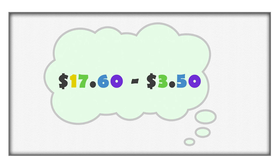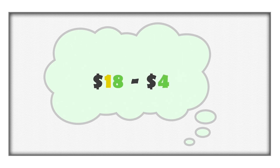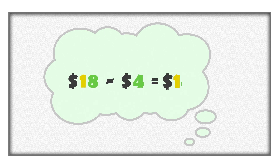We can estimate the answer. $17.60 is approximately $18, and $3.50 is approximately $4. If we take $4 from $18, we have about $14 left.